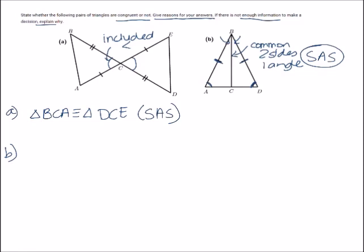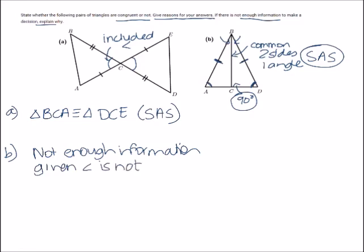If this included angle was equal, then we would be able to say that the triangles are congruent. Or if we were given that this angle here is a 90 degree angle, then we would also be able to say that the triangles are congruent. But at the moment, there is not enough information. And the reason there's not enough information is because the given angle is not included by the given sides.